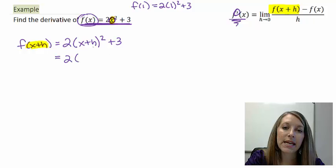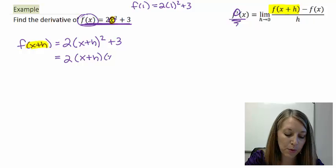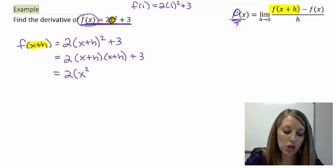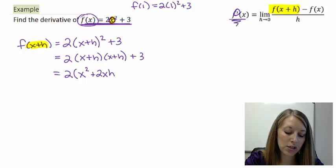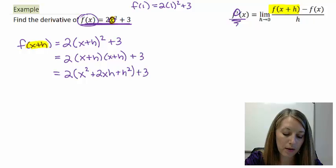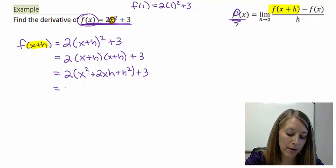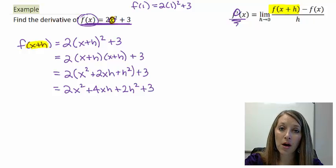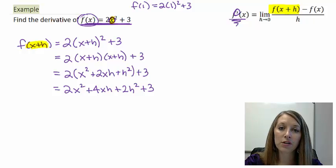I cannot distribute the square — that violates algebra rules. So I have to write out x+h twice and FOIL it. Two times: first, x·x = x²; outside, x·h; inside, x·h — together, 2xh; last, h·h = h². Distributing the 2 gives me 2x² + 4xh + 2h² + 3. There are no more like terms, so that completes the first step.